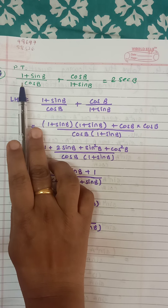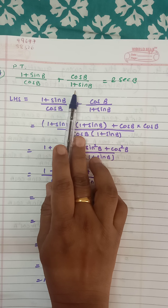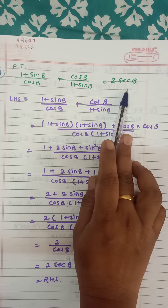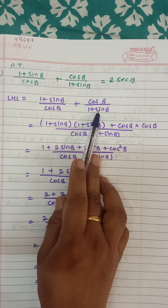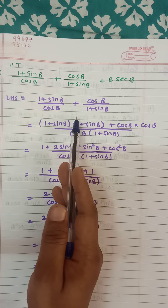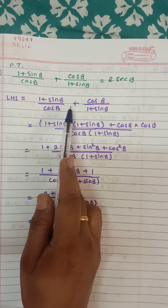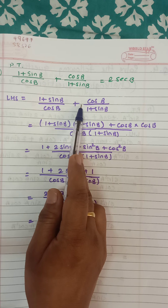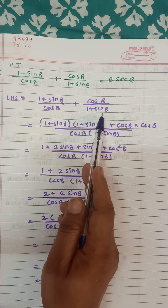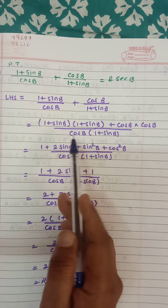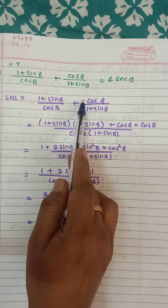Question number 16: (1 plus sin b) upon cos b, plus cos b upon (1 plus sin b), is equal to 2 sec b. Write LHS. It is already in sin and cos so no conversion needed. This is an addition of fractions, so cross multiply and add.